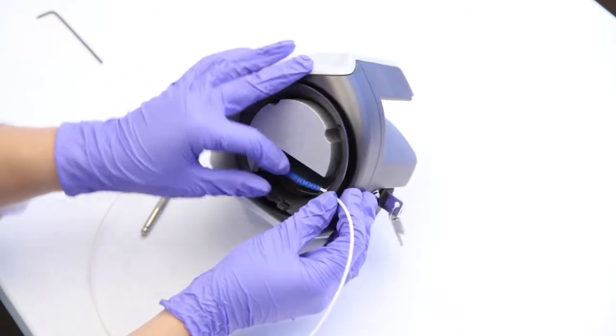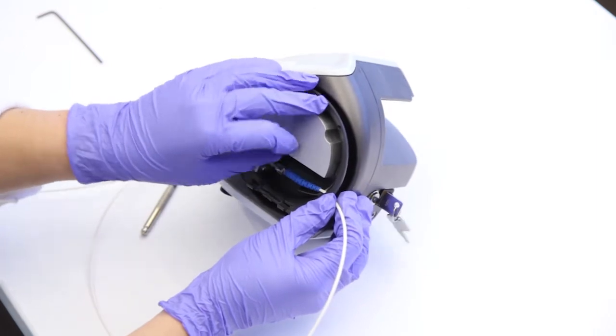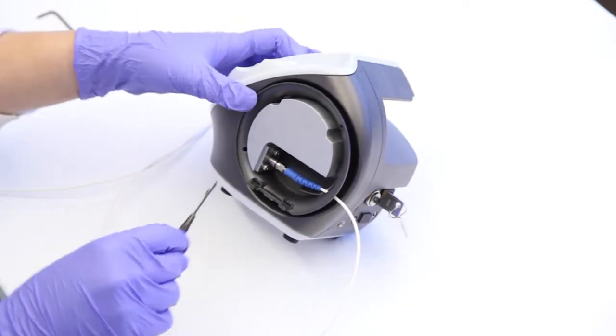Use your fingers to secure the SMA connector to the diode aperture and tighten it with the provided wrench.